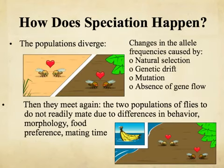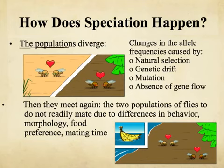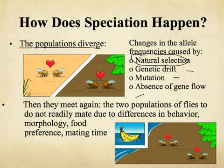Now I have two populations: a population of fruit flies on the island they were washed to by the hurricane, and a population on the mainland. Over thousands or hundreds of years, these populations diverge through natural selection, genetic drift, mutations, and no gene flow because the flies can't get between the island and the mainland. The two populations become more and more different.